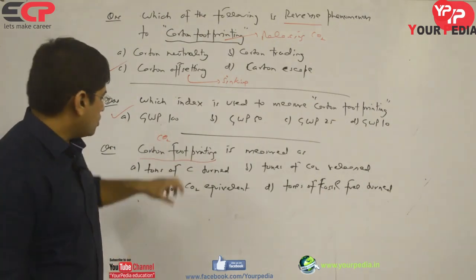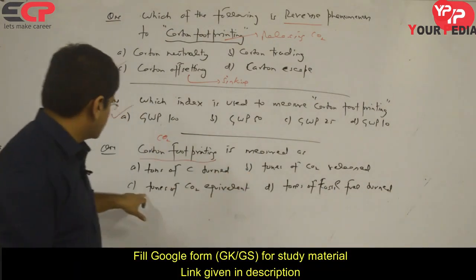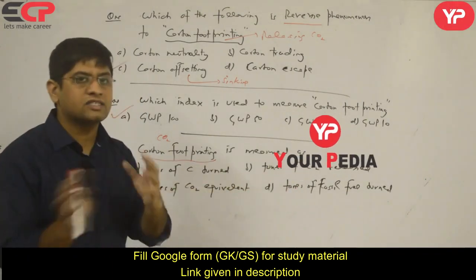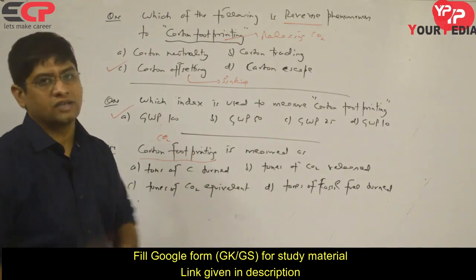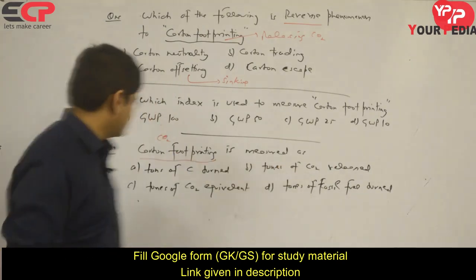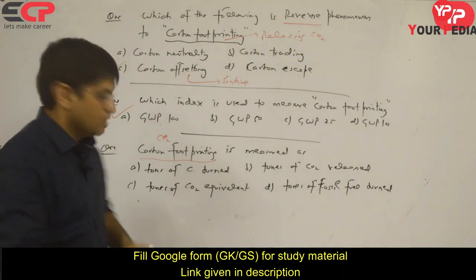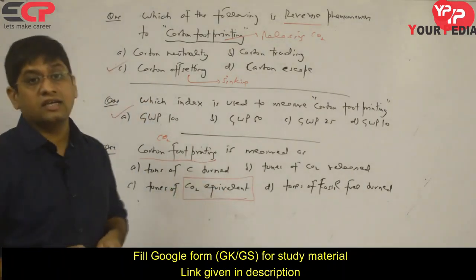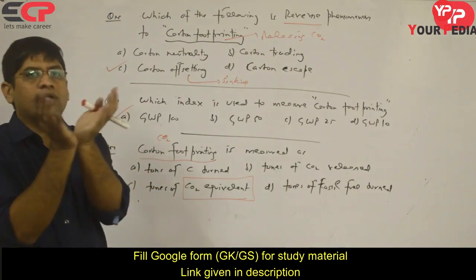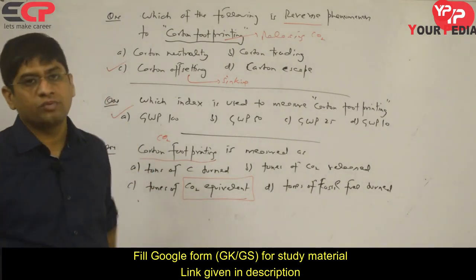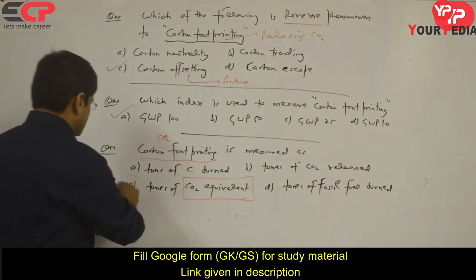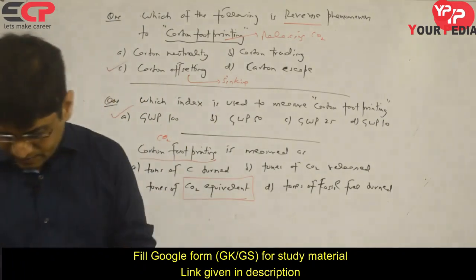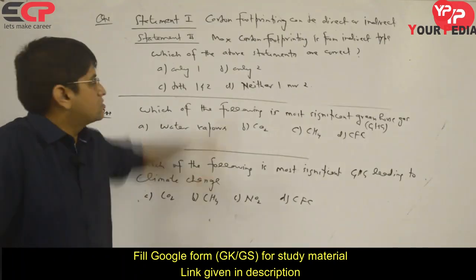There are two similar-looking choices: 'tons of carbon dioxide released' and 'tons of carbon dioxide equivalent.' When two choices look similar, the answer is one of them. In carbon footprinting, the term used is carbon dioxide equivalent — how much carbon dioxide equivalent was released is the carbon footprint. So the answer is carbon dioxide equivalent measured in tons.